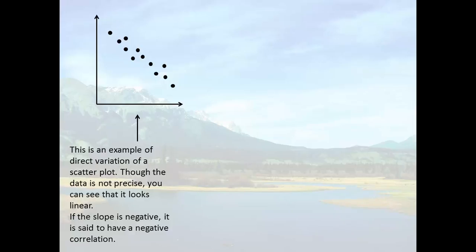Okay, I've got some scatter plots here. And we're going to talk about what they really represent. This is a scatter plot that does represent direct variation. Even though the data is not precise, you can see that it looks generally linear. In other words, there's a line that could fit through there nicely. We also say that if the slope is negative, it is said to have a negative correlation.